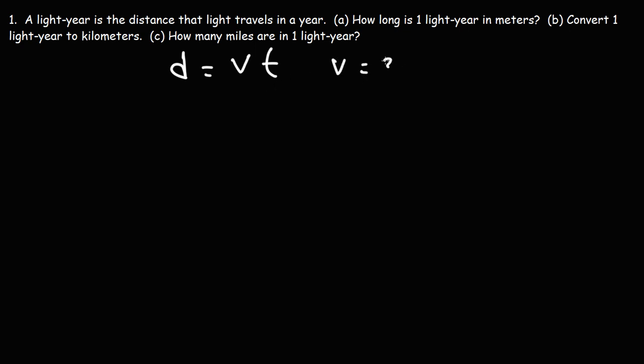Now, the speed of light is 3 times 10 to the 8 meters per second. That's 300 million meters in one second. The time is one year. Now, because the speed has the unit seconds in it, we need to convert years into seconds. So let's go ahead and do that.